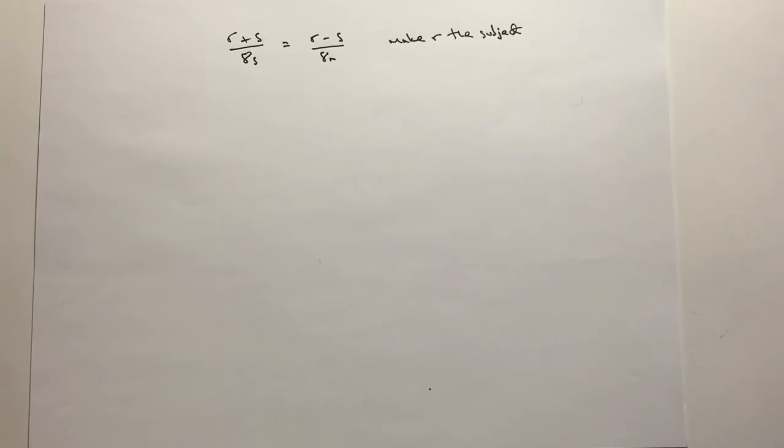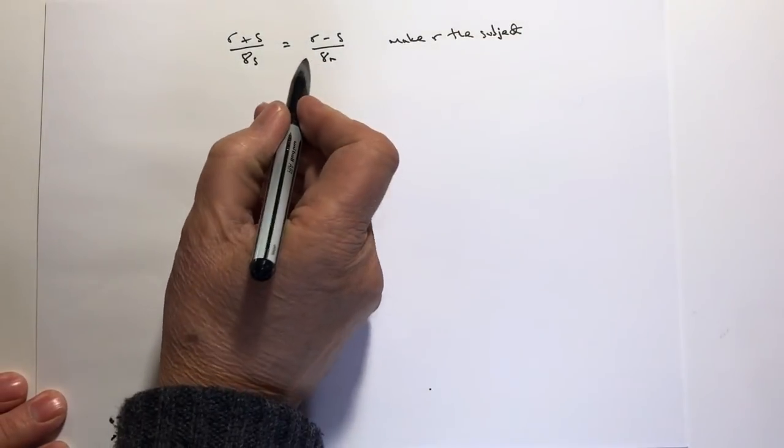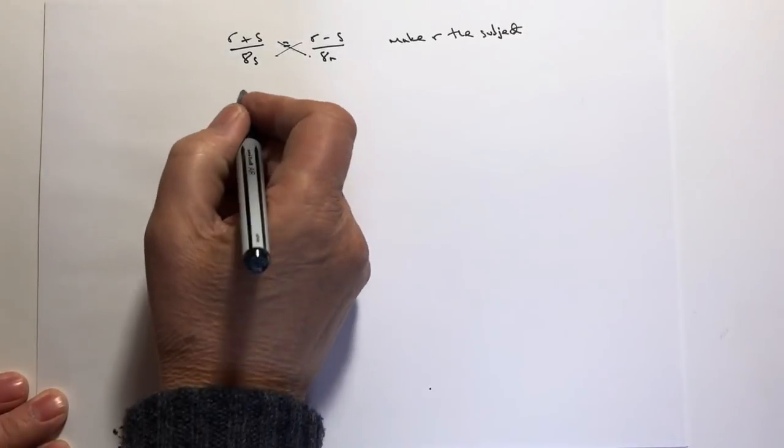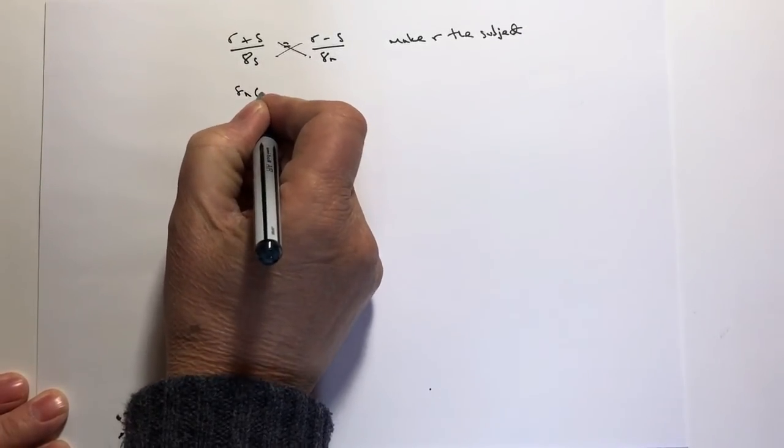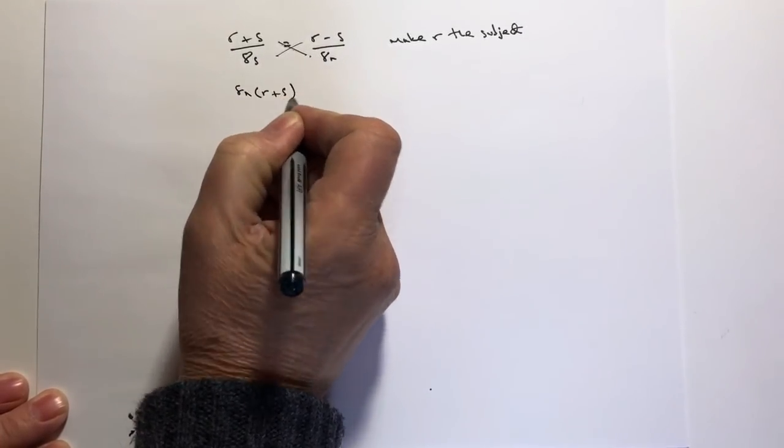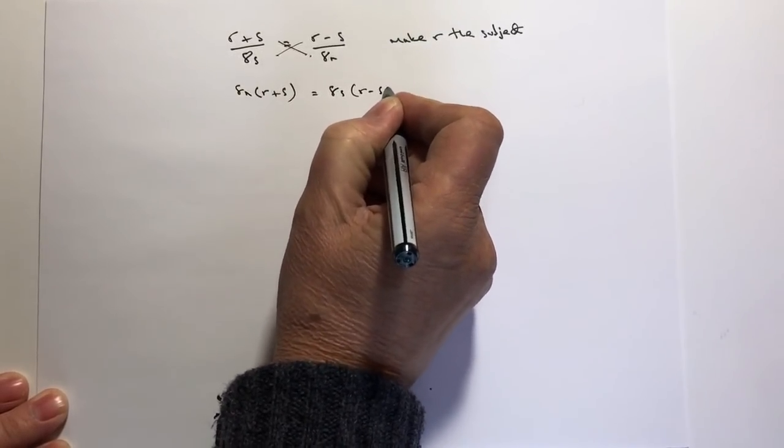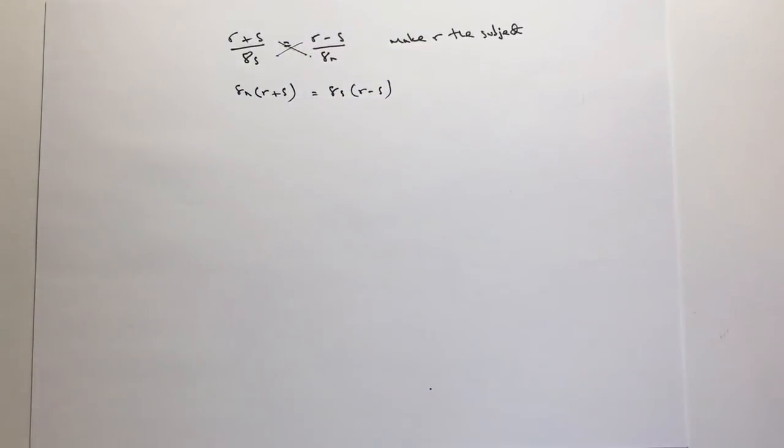So the first thing I'm going to do is I'm going to cross multiply. What I'm going to do is I'm going to say that if I cross multiply these together, I get 8n multiplied by r plus s equals 8s multiplied by r minus s. I hope that's OK for you at that particular point.